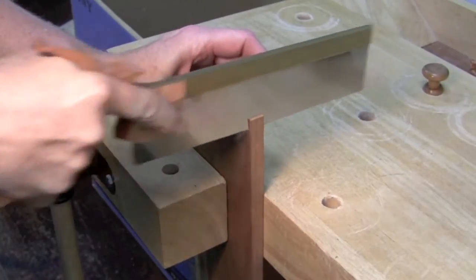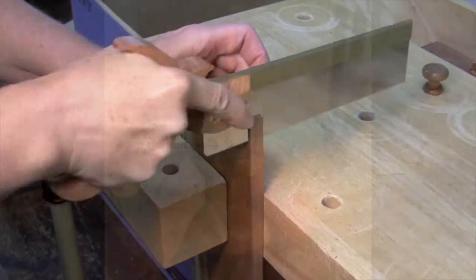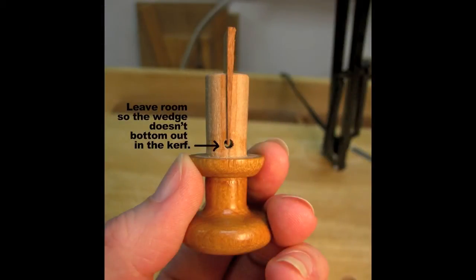Saw your wedge longer than necessary so you can trim it to fit. The wedge should have a little breathing room at the bottom of the drilled hole. If the wedge is too long, the drawer pull will never be flush with the drawer.